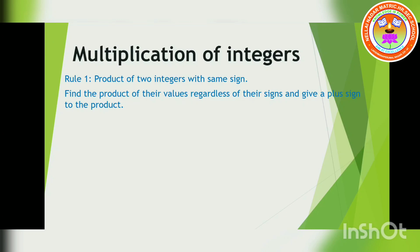Find the product of their values regardless of their signs and give a plus sign to the product. So first, I am going to take two integers with the same sign — both numbers should be positive, or if negative, both numbers should be negative. First, I should multiply the numbers and find the answer. Next, I should see the sign. Since both are the same sign, whether it is plus or minus, I have to put the plus symbol for the answer.